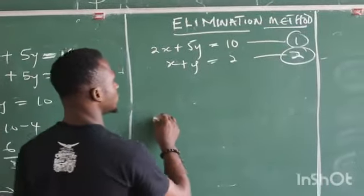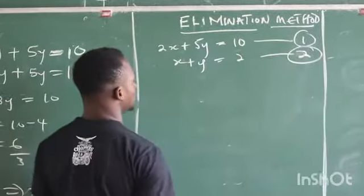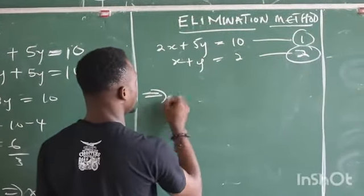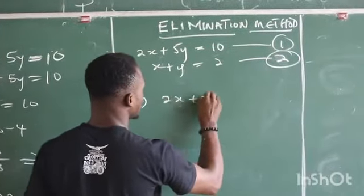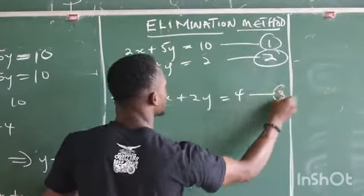What we are going to do with this, we look at equation 2. If we multiply 2 with everything in equation 2, we are going to have that a new equation will be 2x plus 2y equals 4. That is our new equation 3.